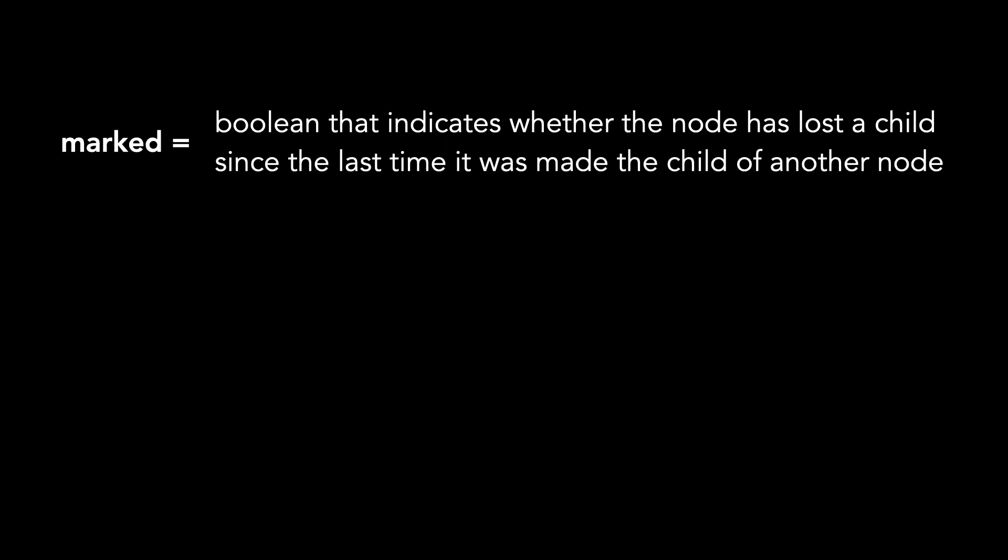That's a mouthful, I know, but this property helps us keep desired time bounds for our Fibonacci heap methods by keeping track of some of the node's history. If a node's marked value is true, I'll color it yellow.